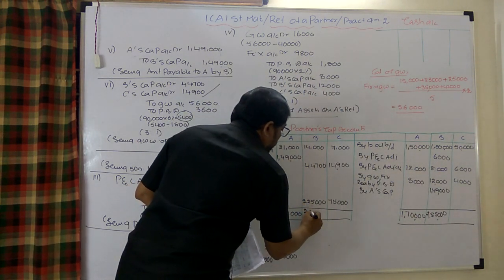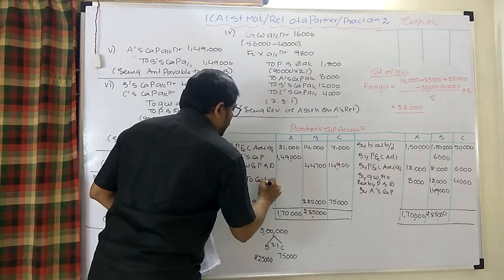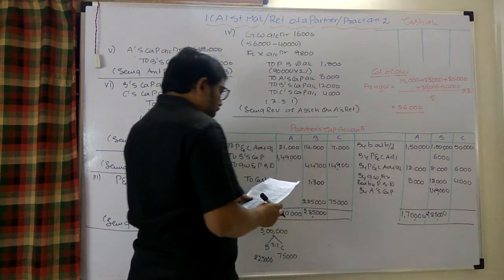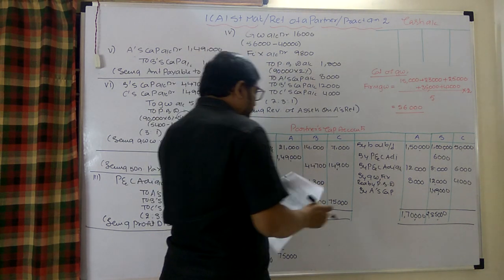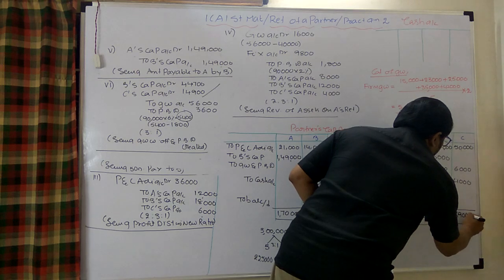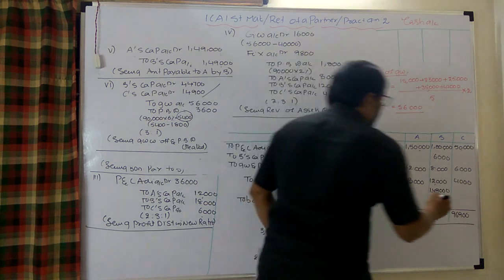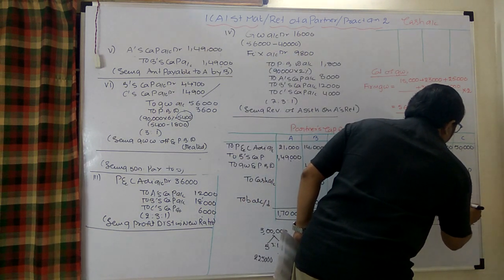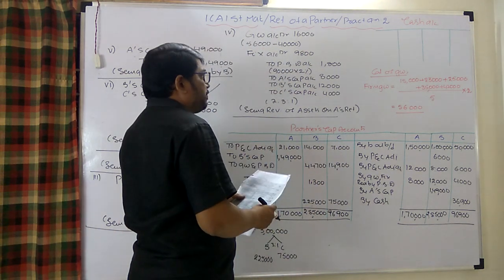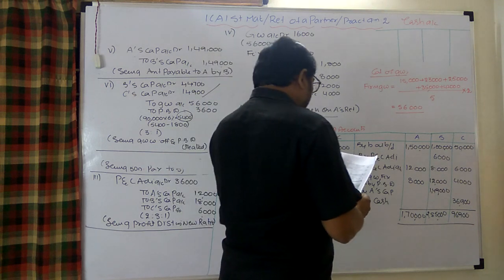B's credit total is 2,85,000, so the firm needs to pay B 1,300 to reduce his capital to 2,25,000. Wait — checking the figures, the firm pays 1,300 to B. For C, the debit side is more at 96,900, so C must bring in 36,900 to achieve the required capital of 75,000. One partner is paid, and the other brings money in.